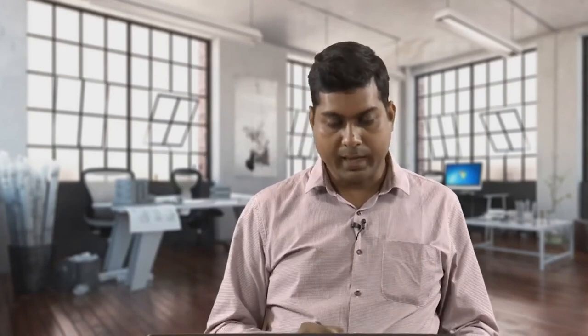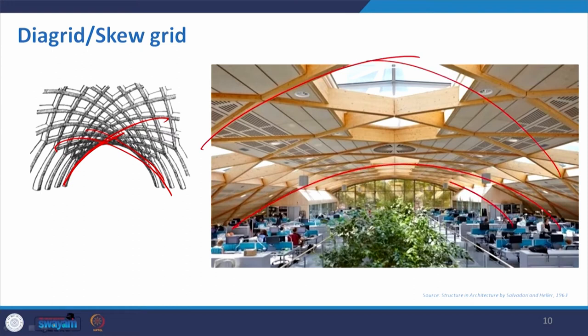Proceeding with the diagonal grid, you can see that the grid is placed in the form of an arch and they are crossing each other — so it is not very straight, each will have some crossing nature forming this particular grid. It is also being used for public spaces like office areas, where you can see cubicles — this roof being created with diagonal grid.